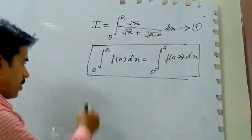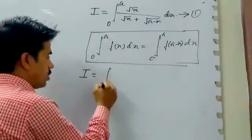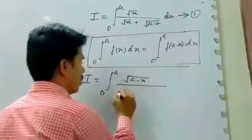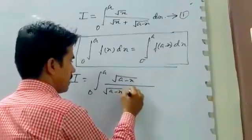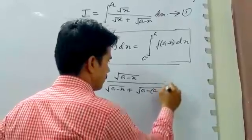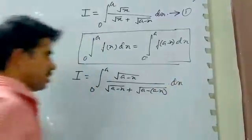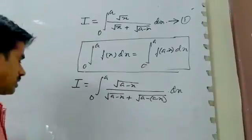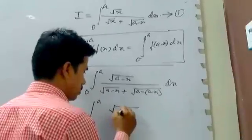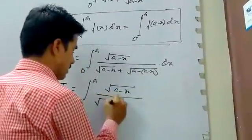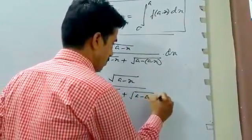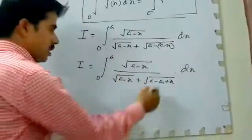We apply this property. We get I equal to integral from 0 to A of square root of A minus x divided by square root of A minus x plus square root of A minus (A minus x) dx. We are going to simplify it. It becomes square root of A minus x divided by square root of A minus x plus square root of x dx.